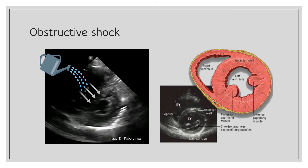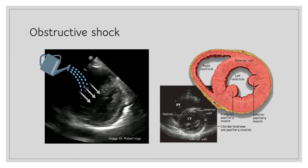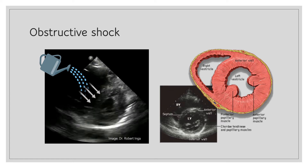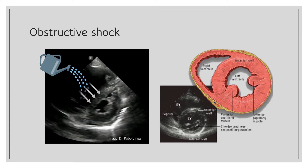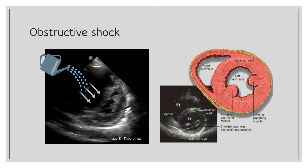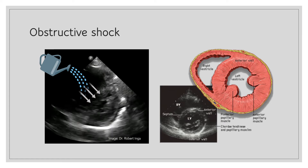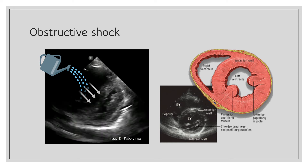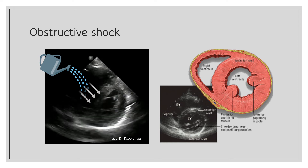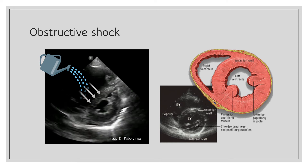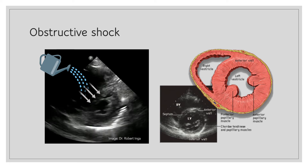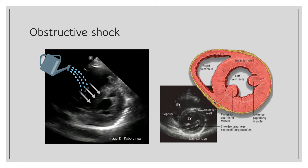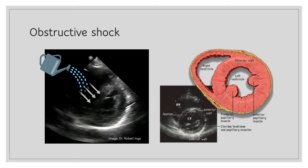Like the previous patient with cardiogenic shock, this hypotensive patient with obstructive shock also would not benefit from fluids. If you give fluids to this patient, they are going to go to the right side of the heart, further compressing the left ventricle, resulting in decreased cardiac output and ultimately hemodynamic collapse.